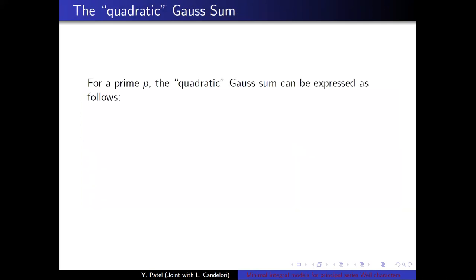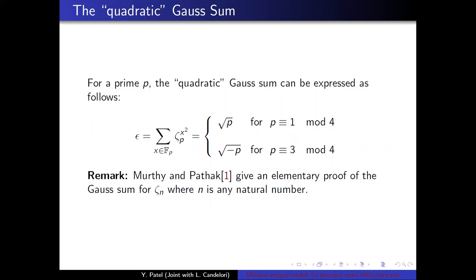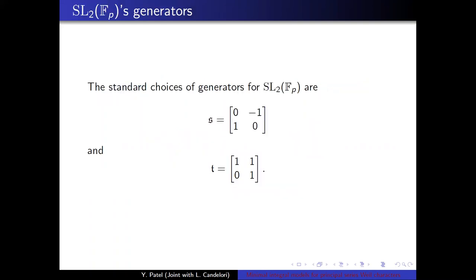Next, the quadratic Gauss sum. For prime P, the quadratic Gauss sum can be expressed as follows. Epsilon is equal to square root of P if P is congruent to 1 mod 4 and square root of negative P if it's congruent to 3 mod 4. Imran Murthy and Sidi Patak have an excellent elementary proof of this Gauss sum for zeta n where n is any natural number. It's a really good paper. The generators for SL2Fp that I'll be using are the quote standard, unquote, mathfrac s is equal to this matrix here and mathfrac t is given by this.